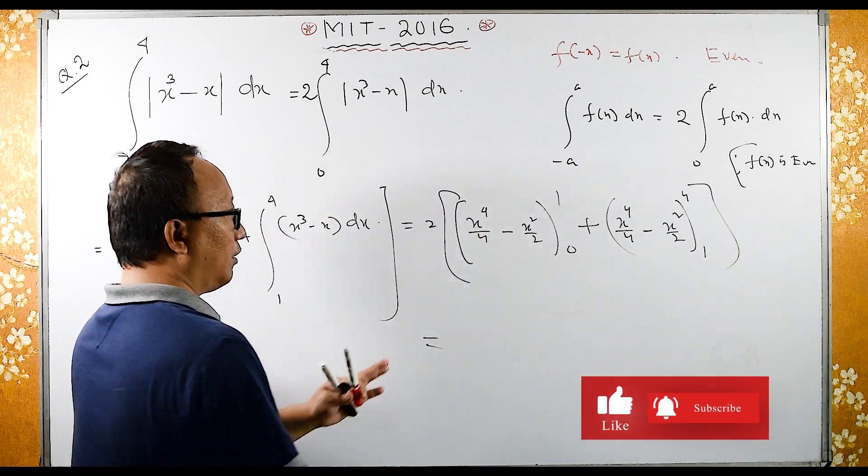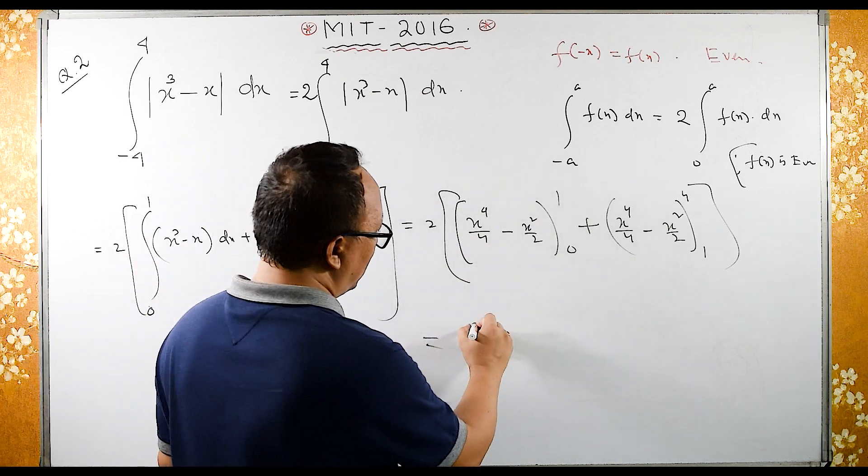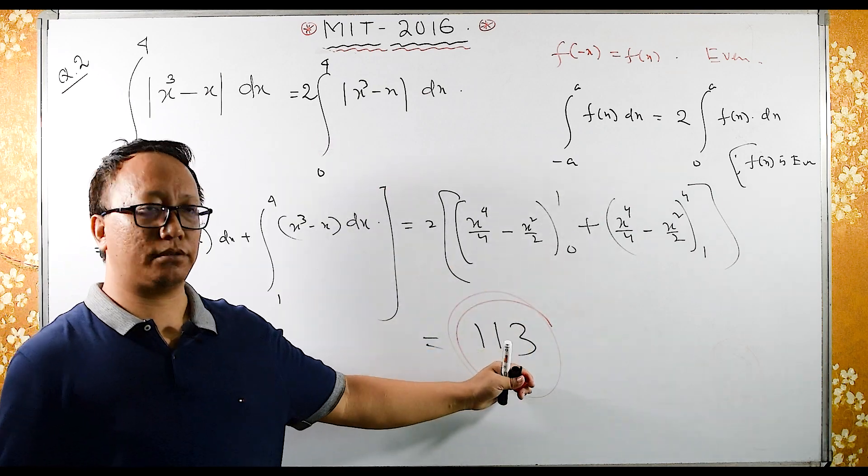So we solve this upper limit minus lower limit, you will get this value 113. So I am giving homework, check whether you are getting this or not.